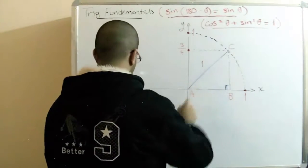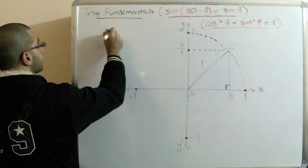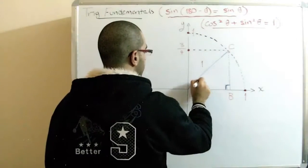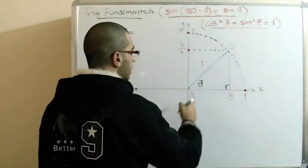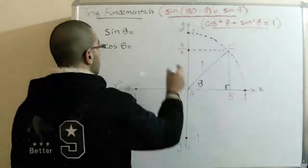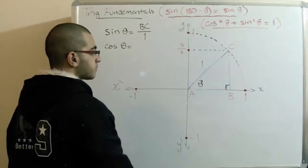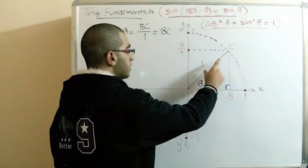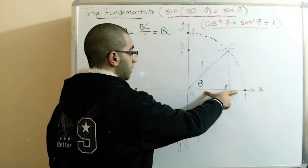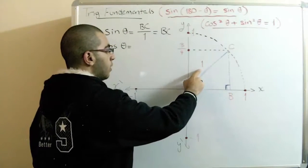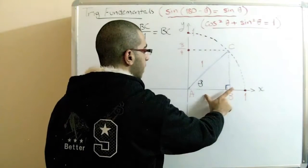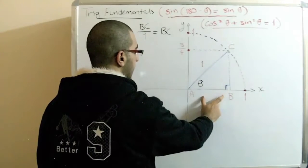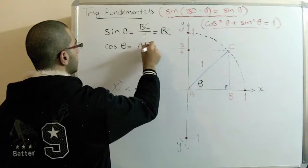Here in our triangle, as we learned before, sine theta equals the opposite over the hypotenuse, which equals BC over 1, so it equals BC. AC equals 1 because AC equals the radius of the circle, and since the radius equals 1, the hypotenuse also equals 1. Cosine theta equals the adjacent over the hypotenuse, which is AB over 1, so it also equals AB.